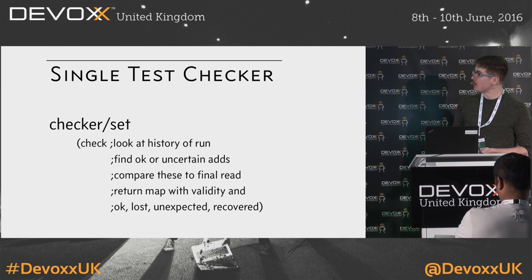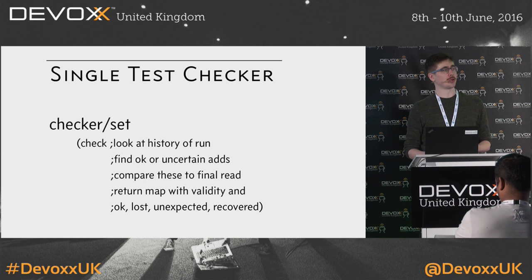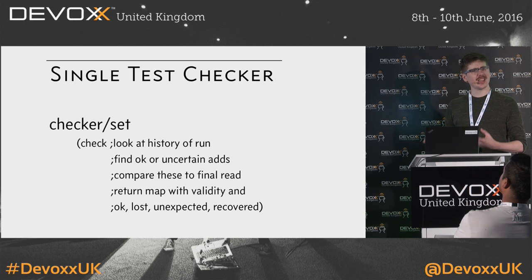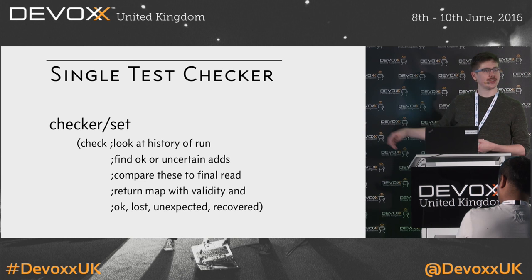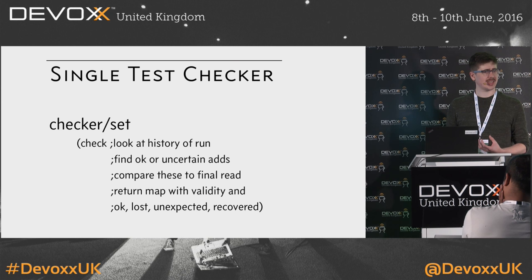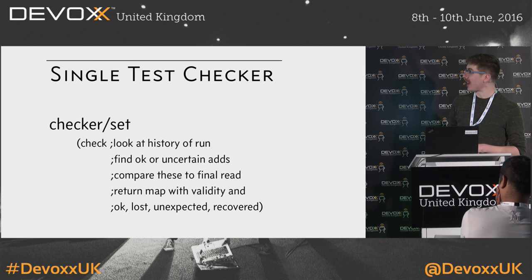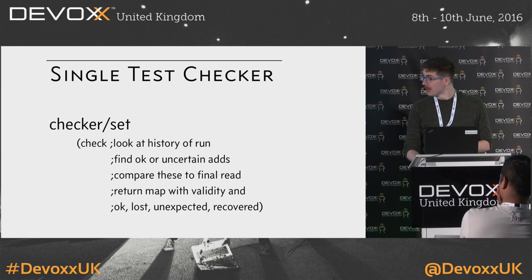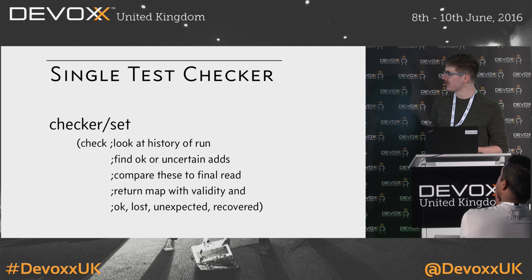Finally we'll have a test checker — think of this as your generalized assert. This is where you read the history and make a series of judgments about its validity. In the case of a set checker, we look at the history of that run, find all successful writes and add them to a successful set, find all unknown or uncertain writes and add them to an unknown set, and compare these to the final read. If we find a value in our final read that isn't in the OK or unknown sets, that's a failure because we never meant to write it to the cluster. If we find a read that's in our unknown or OK set, that's fine. And we want to make sure all our OK writes are in the read set — giving us specific granularity judgments of OK writes, lost writes, unexpected writes, or recovered writes.